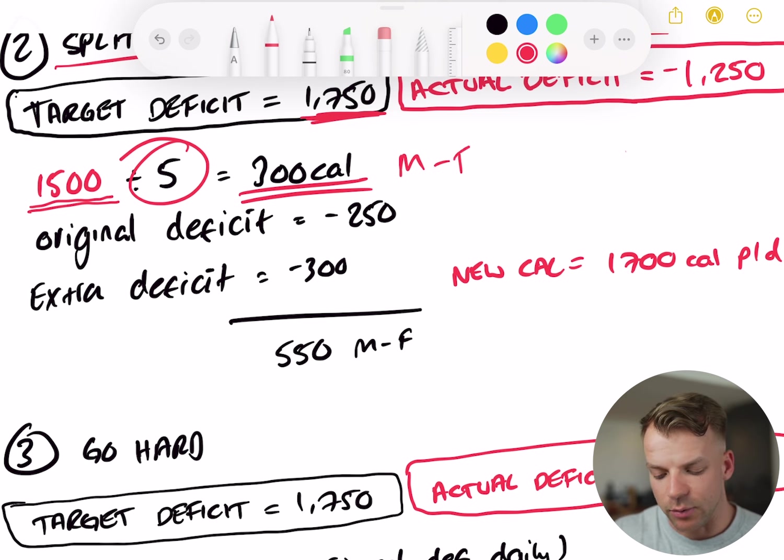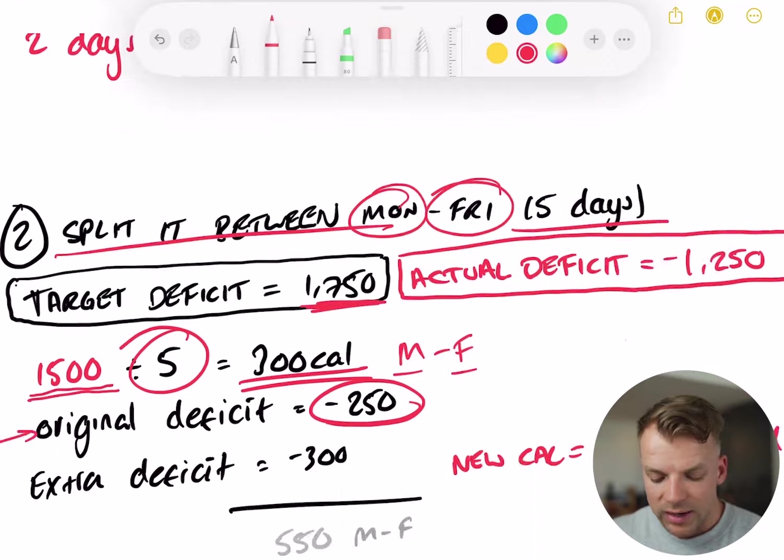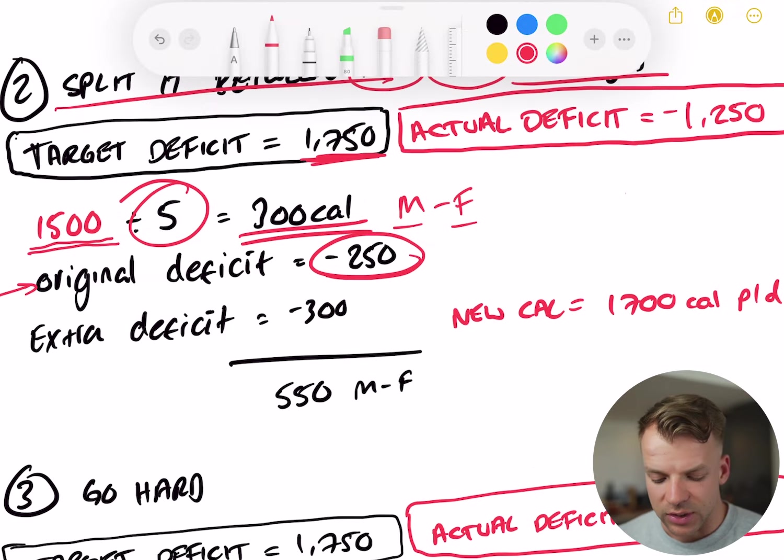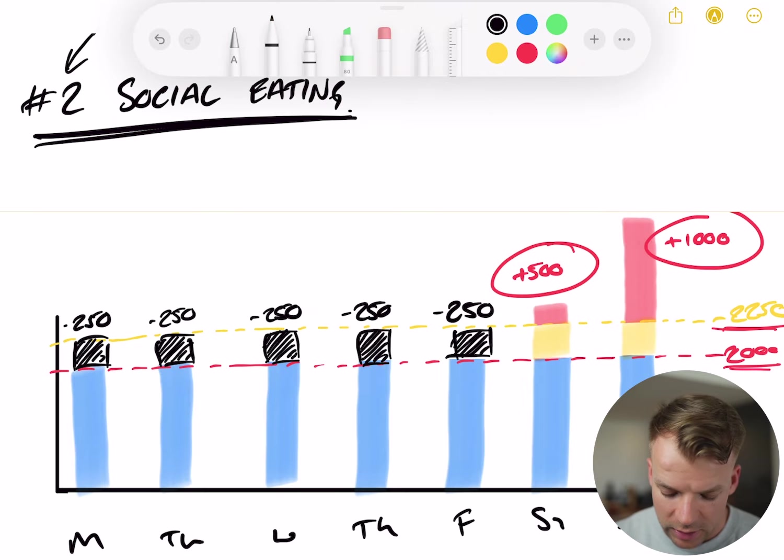Monday to Friday is a five-day week. That means that you just need to eat 300 calories less on Monday, Tuesday, Wednesday, Thursday, and Friday, and you will achieve the deficit that you've essentially eaten over the weekend. So your original deficit right here was originally 250 calories per day. That got us down from our maintenance of 2,250 to 2,000. We're going to add on the extra deficit that we've just calculated here.